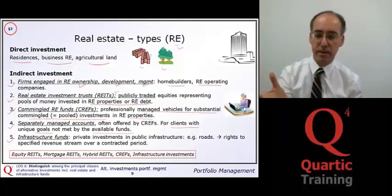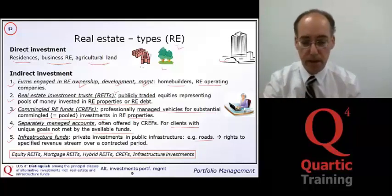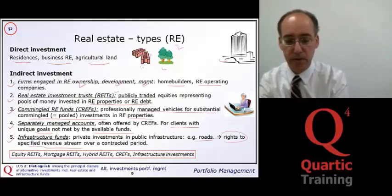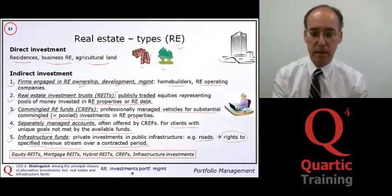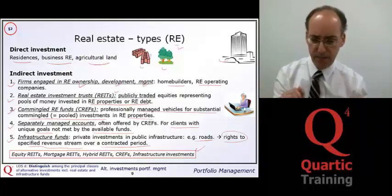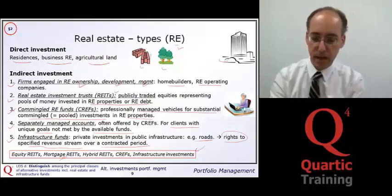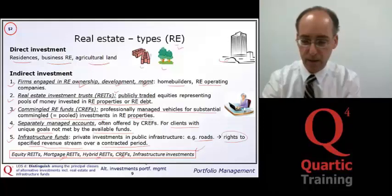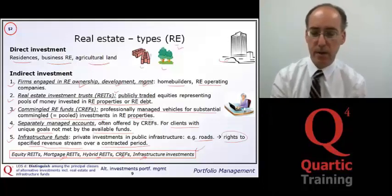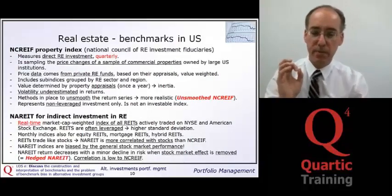Infrastructure funds allow private investments in public infrastructure such as roads, and typically receive rights to specified revenue streams over contracted periods of 20 or 30 years. Additional variations include equity REITs, mortgage REITs, and hybrid REITs, as well as commingled real estate funds and infrastructure investments. This distinction is important because very specific benchmarks exist for each type.